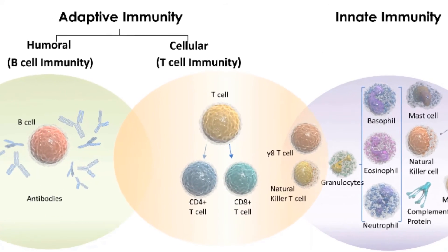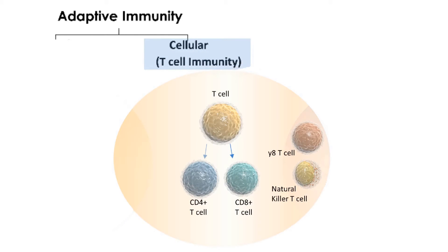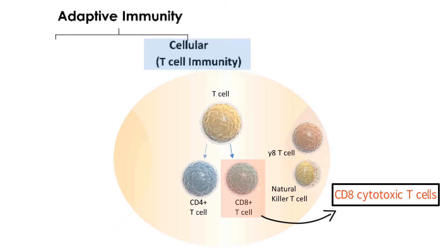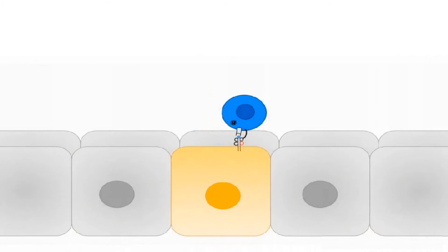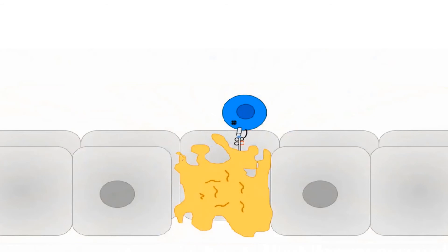When a cell becomes infected and cell-mediated immunity is needed, T cells respond by killing the infected cell. There are numerous types of T cells. Cell-mediated immunity is largely dependent on a class of T cells known as CD8 cytotoxic T cells. The CD8 cytotoxic T cells are called cytotoxic because they are able to kill other cells. When a cell becomes infected with a virus, a CD8 cytotoxic T cell responds by killing the cell infected with the virus. Since viruses replicate inside of cells, killing the cell infected with the virus stops the ability of the virus to replicate.